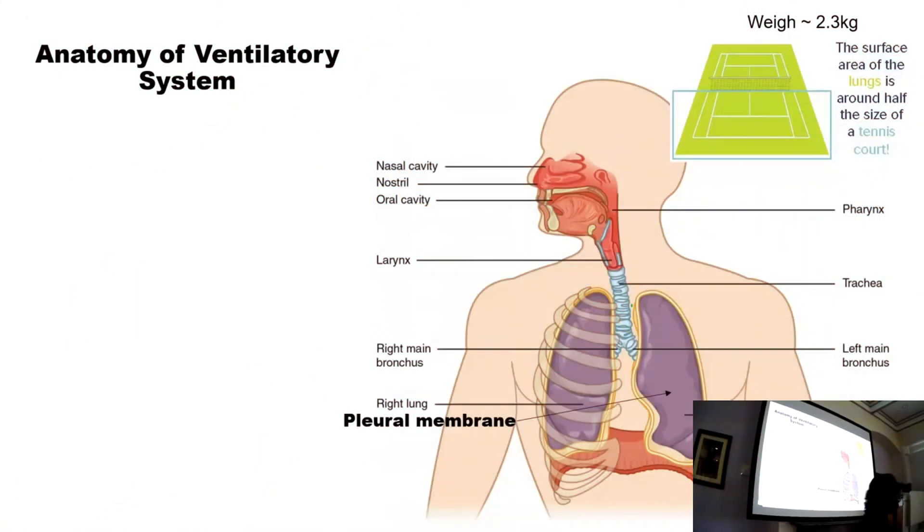The anatomy of the ventilatory system - we've actually got two zones. We've got the conducting zone where air is taken from the atmosphere into the trachea towards the lungs. The nostrils filter, moisten, and warm the air as well.